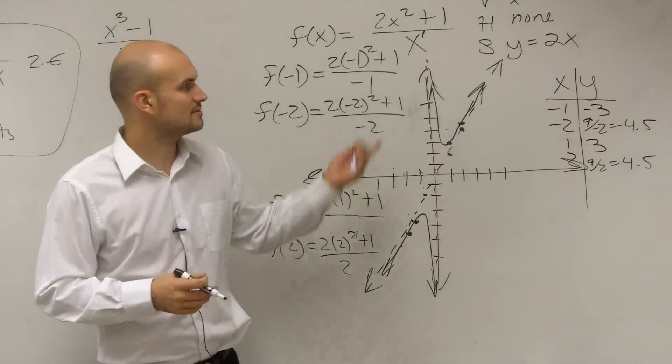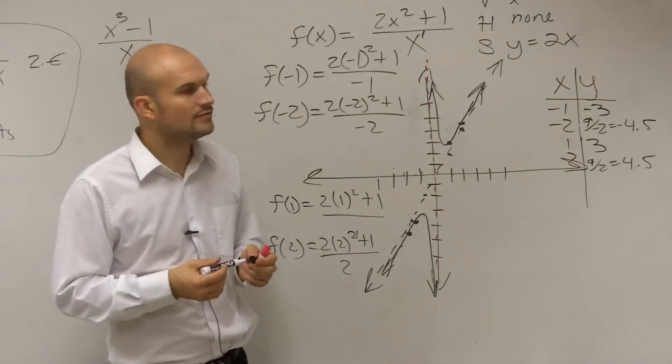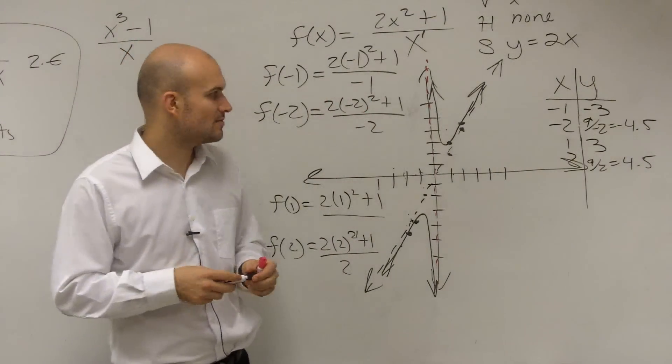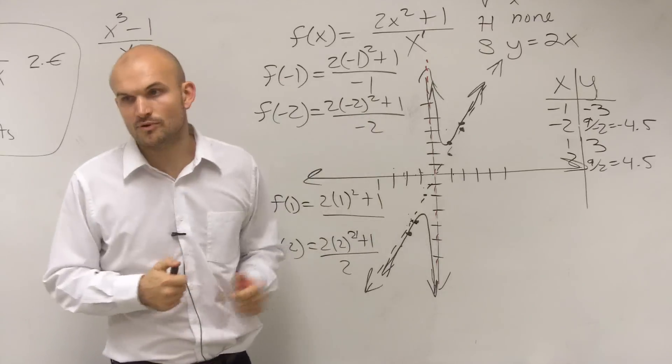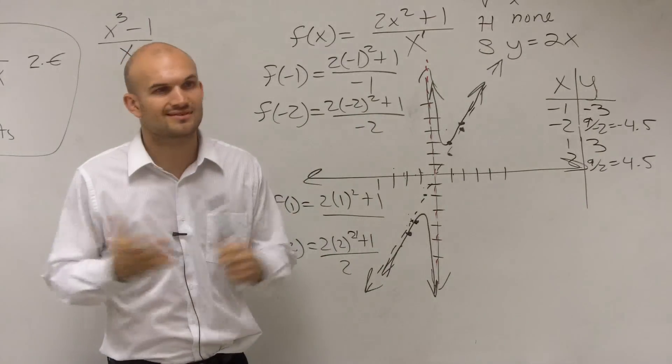Cool? You just got it? So that's all you guys have to do. Vertical, horizontal, slant, x, y-intercept. Pick your solution points to the left and to the right of your asymptotes. That's it. That's all I got for you.